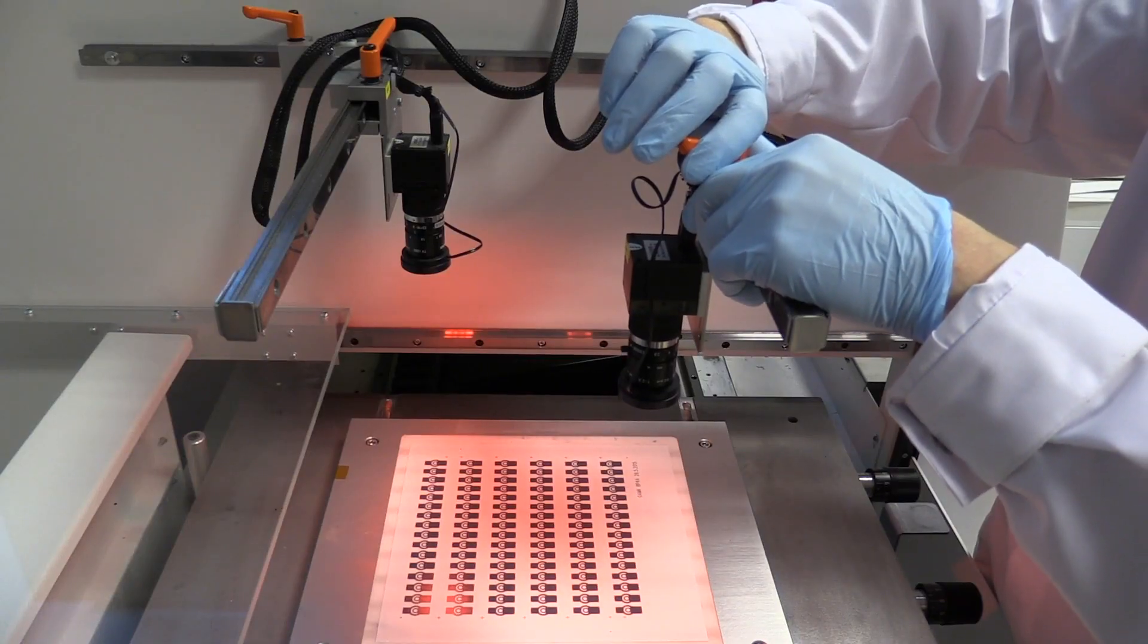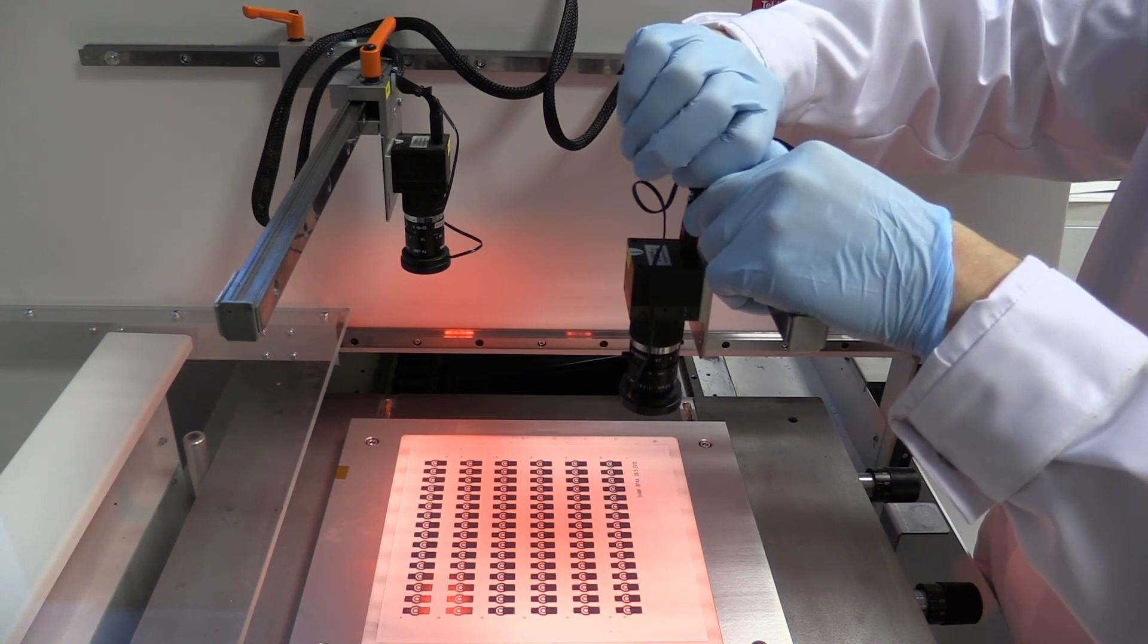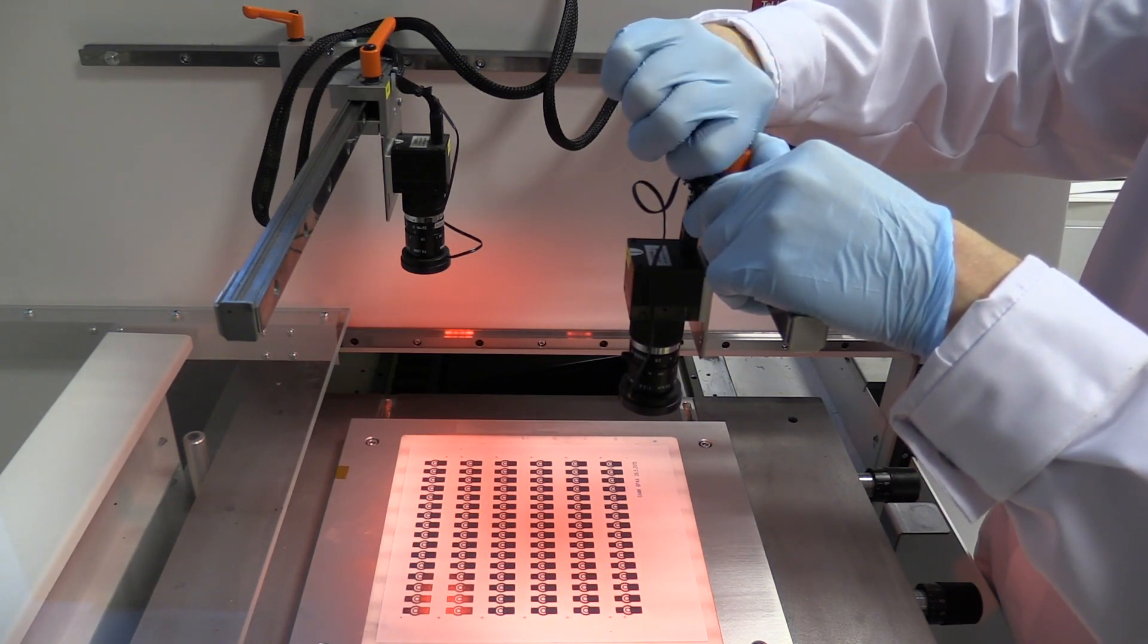Arkkilla olevat kohdistusmerkit opetetaan kohdistuskameroille, jotta aikaisemmin painetun painojäljen päälle tarkka kohdistaminen on mahdollista.